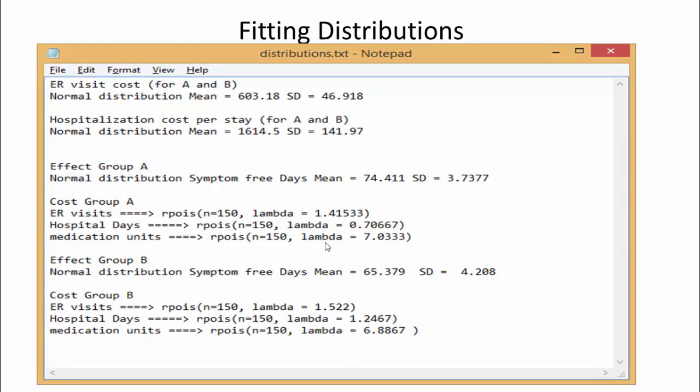There are many ways to fit distributions using commercial software or using R itself to fit distribution of the variables. Here is our dataset. We fit our distributions, the ER visit costs and hospitalization cost per stay follow normal distribution with this mean and this standard deviation.